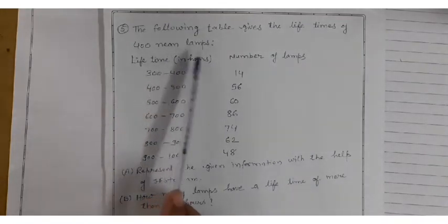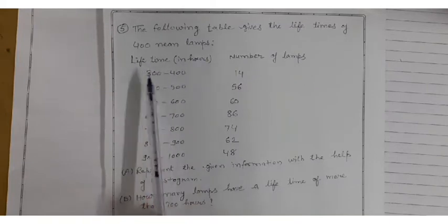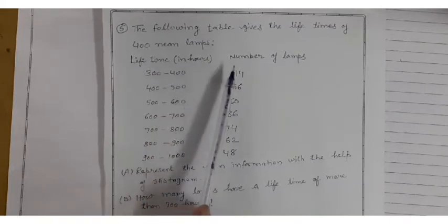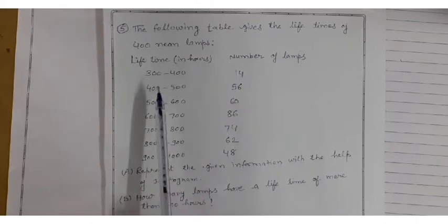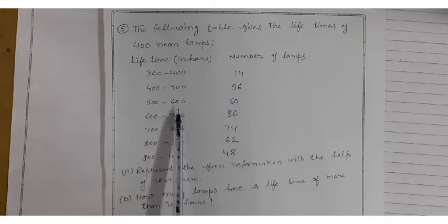The next question is: the following table gives the lifetimes of 400 neon lamps. Lifetime in hours is given to you and number of lamps are given to you. 300 to 400, 14. 400 to 500, 56. 500 to 600, 60.